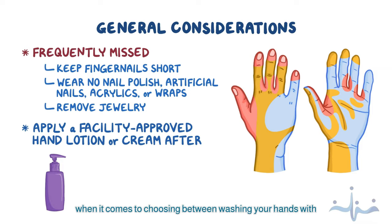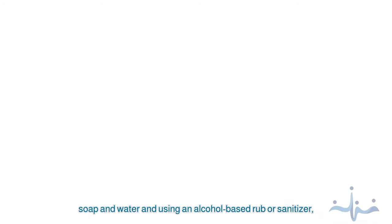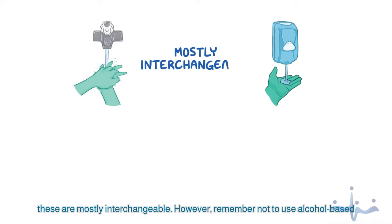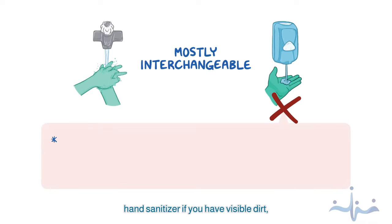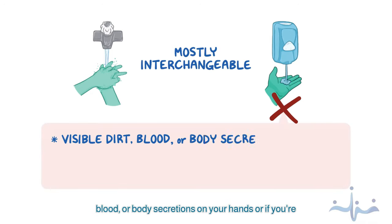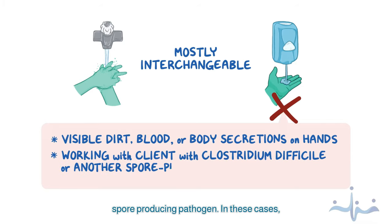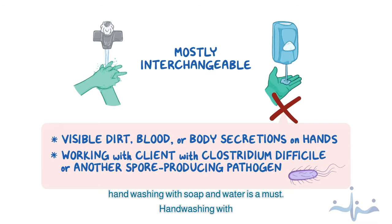When it comes to choosing between washing your hands with soap and water and using an alcohol-based rub or sanitizer, these are mostly interchangeable. However, remember not to use alcohol-based hand sanitizer if you have visible dirt, blood, or body secretions on your hands, or if you're working with a client who has Clostridium difficile or another spore-producing pathogen. In these cases, hand washing with soap and water is a must.